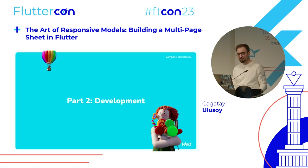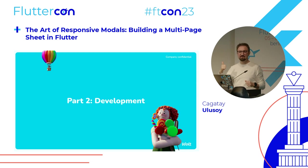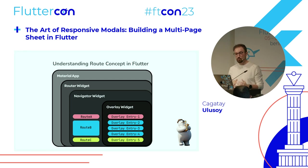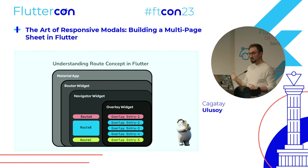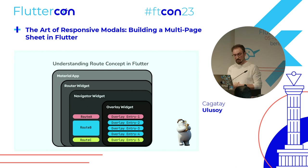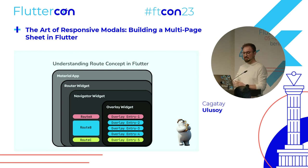Now for the implementation. Let's start with the root concept. We have the MaterialApp in our Flutter app — it is the root widget providing various functionalities including navigation. MaterialApp has a Router widget, introduced in Navigator 2, to decouple navigation logic from UI logic. The Router widget manages and provides more control over the navigation stack. The Router widget has a Navigator widget, which is responsible for managing route objects. A route represents a screen or a page.